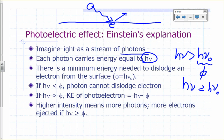If the energy of the photon is less than phi — the work function — the photon cannot dislodge an electron. If it's higher than phi, it will dislodge the electron. The difference between h*nu and phi — photon energy minus the energy needed to remove the electron — becomes the kinetic energy of the photoelectron.